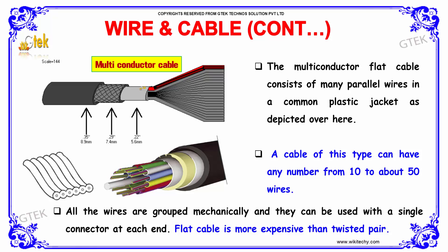The multi-conductor flat cable consists of many parallel wires in a common plastic jacket, as depicted here. A cable of this type can have anywhere from 10 to about 50 wires. All the wires are grouped mechanically and they are used with a single connector at each end.